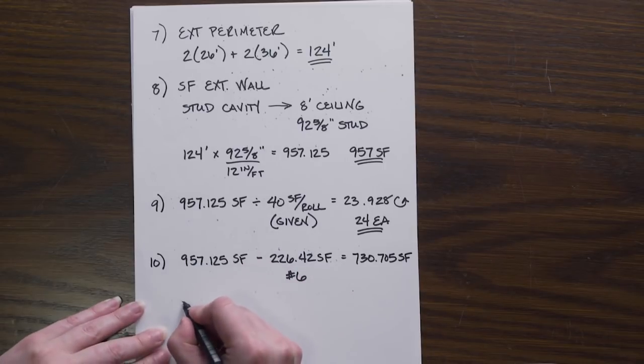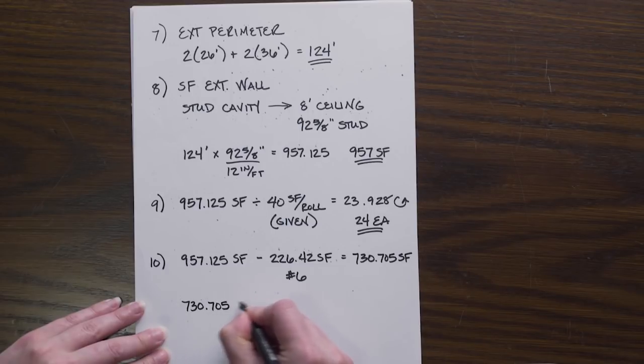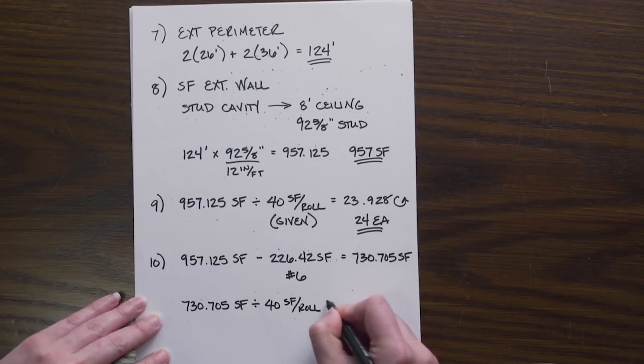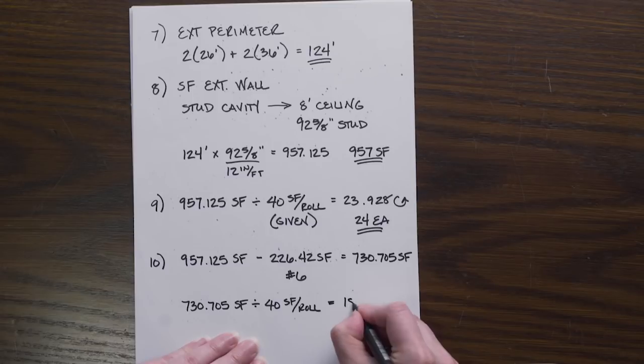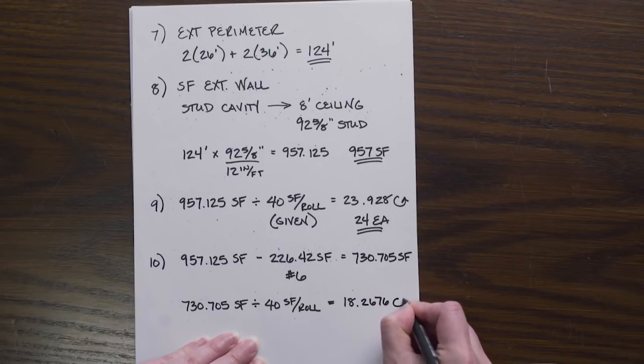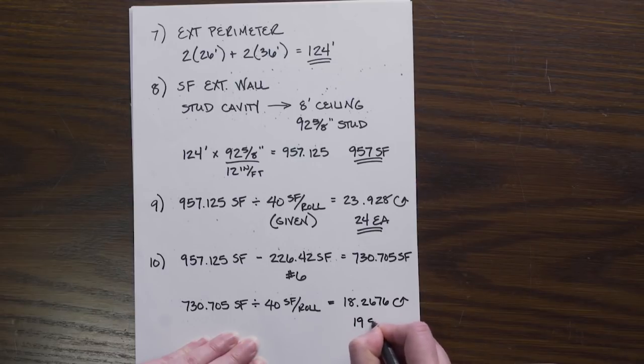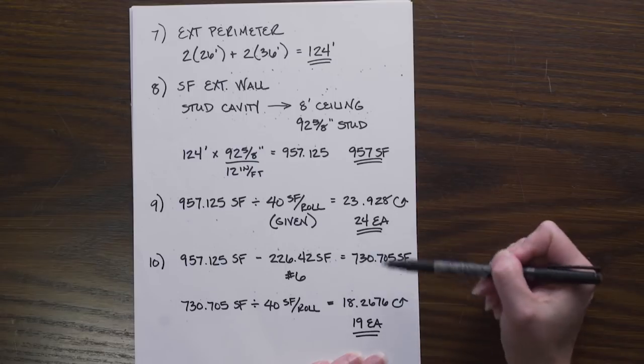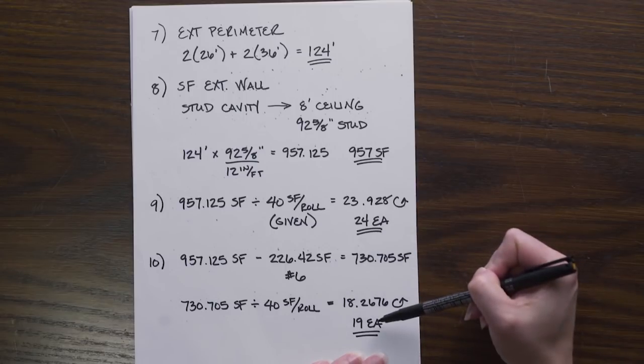Total we have 730.705 square feet of exterior wall without the openings factored in. Just like then in number nine, we can take the square footage, divide it by the 40 square foot per roll, and we get 18.2676, which we round up to 19 rolls of insulation. It's very clear to see that we just saved ourselves five whole rolls of insulation by not including the openings in our calculations.